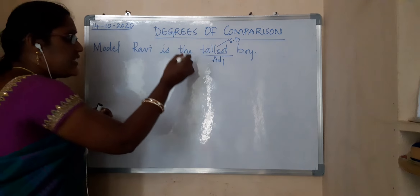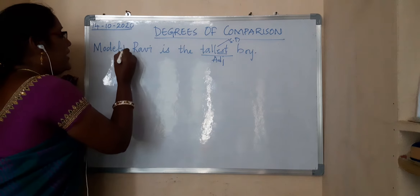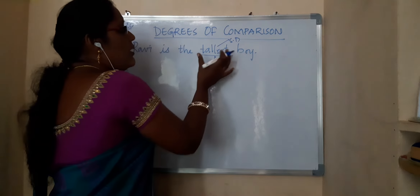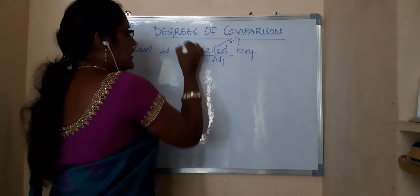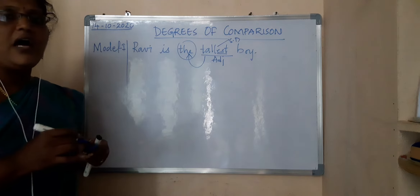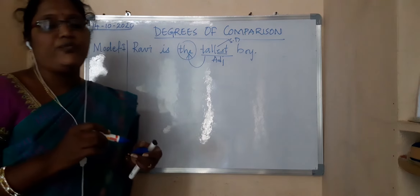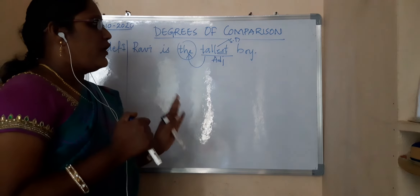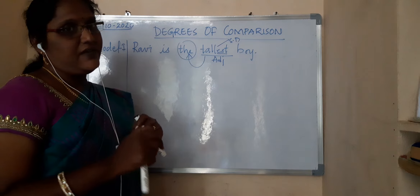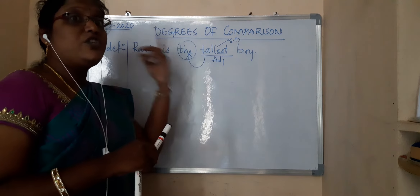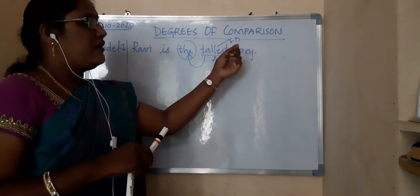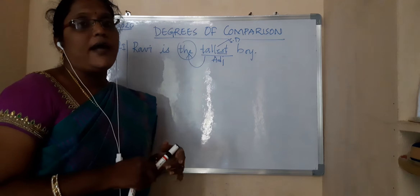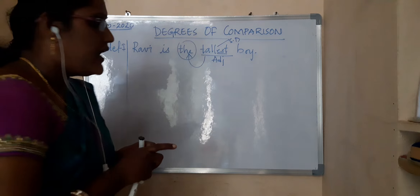So how do you identify that this sentence comes under Model 1? Before the adjective, when you have the article 'the,' we call it a Model 1 sentence. In 'Ravi is the tallest boy,' the adjective is 'tallest,' it is in superlative degree, and before it you have 'the' — so this is Type 1.